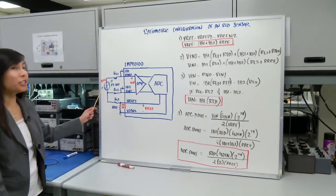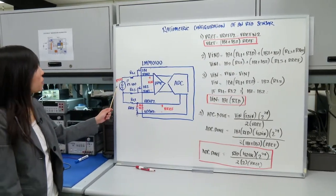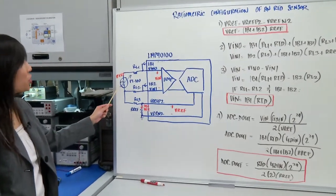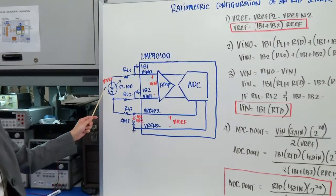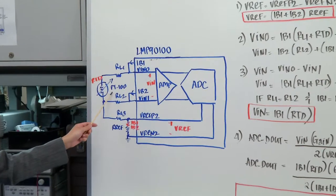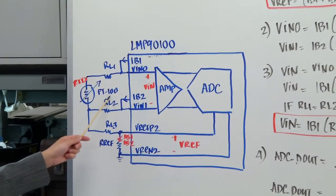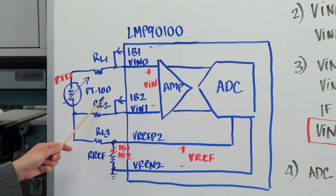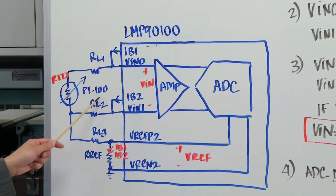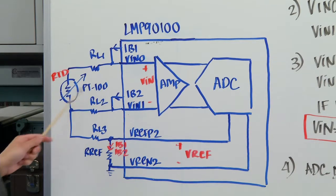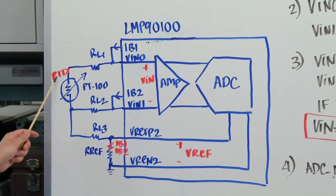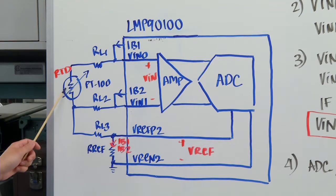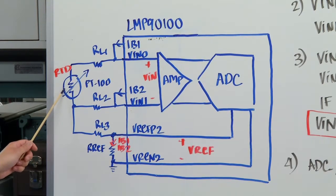So an RTD sensor stands for Resistance Temperature Detector and its resistance changes linearly as temperature increases. Typically a part number for an RTD is PT100 or PT500. The last number of the part number represents the resistance at zero degrees Celsius. So in this case at zero degrees Celsius this RTD will have 100 ohm and this resistance will increase as temperature increases.